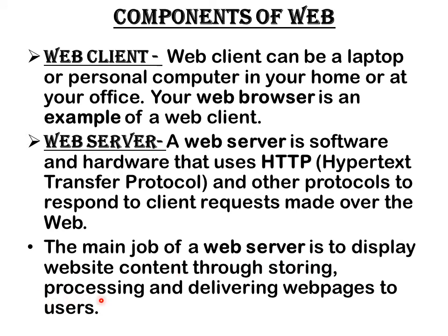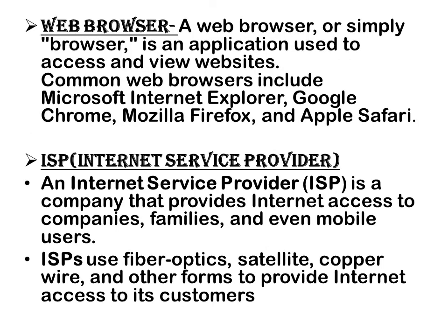The main job of the web server is to display website content by storing, processing, and delivering web pages to the user. When you search for something on Google, all the information comes in the form of web pages, and HTTP is responsible for showing you that information. A web browser — or simply a browser — is an application used to access and view websites. Commonly used web browsers are Microsoft Internet Explorer, Google Chrome, Mozilla Firefox, and Apple Safari.